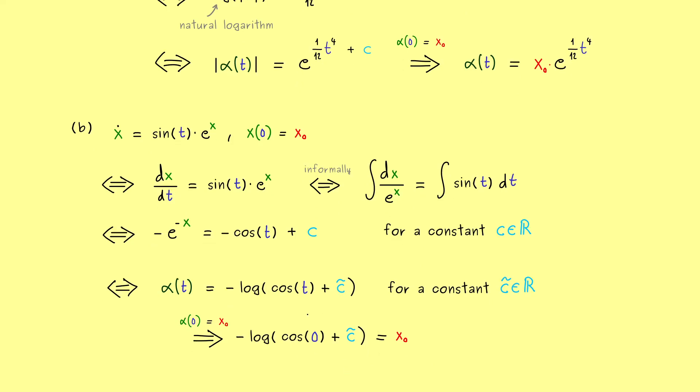Since the cosine of 0 is 1, we immediately have the solution here. Namely, c tilde is given as an exponential function. More precisely, it's e to the power minus x0. And then we have to subtract the cosine of 0. We put that in and then the whole initial value problem is solved.